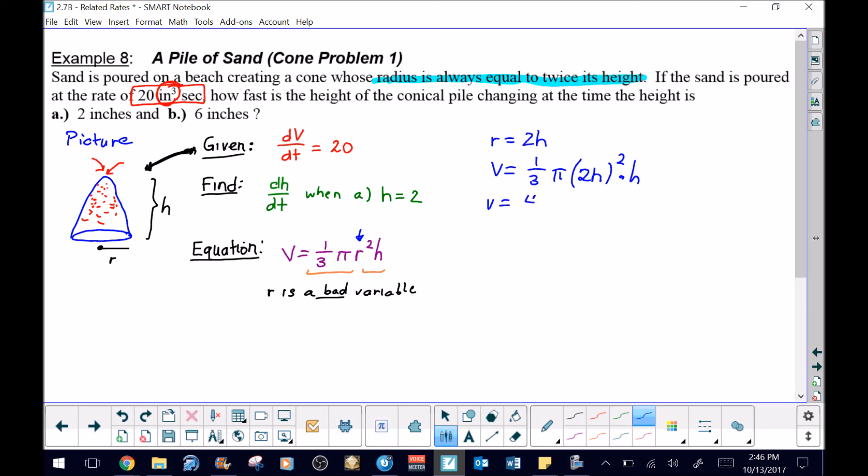So I can bring all of my constants out to the front, and then I would have an h³—h² times h. That makes for a very easy derivative. Now the 3 comes out in front, the threes cancel.